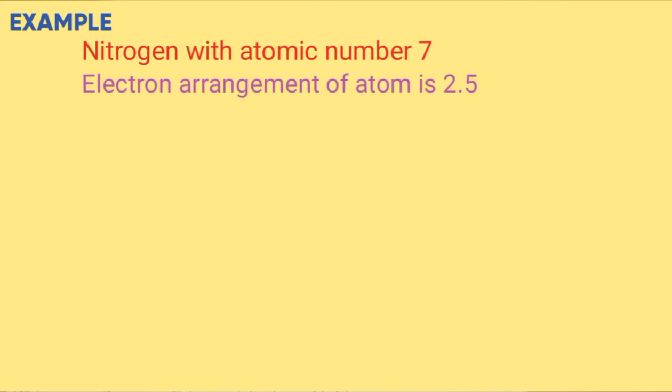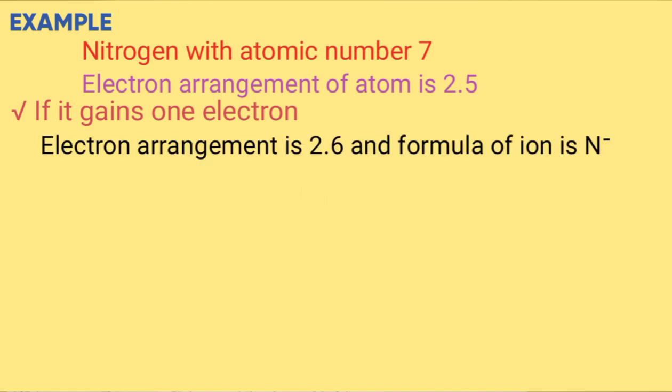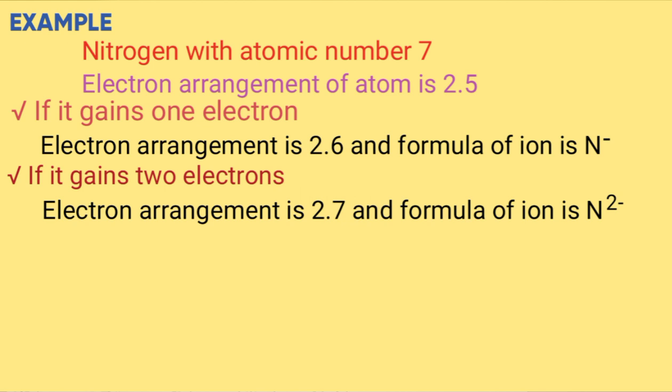Example: nitrogen, atomic number 7, configuration of the atom is 2.5. If it gains 1 electron, configuration becomes 2.6 and the formula becomes N^-. If it gains 2 electrons, configuration becomes 2.7 and the formula becomes N^2-.